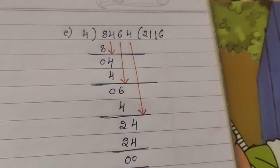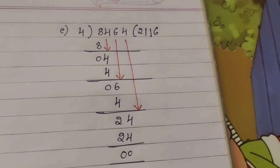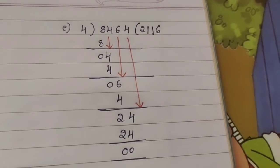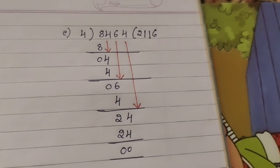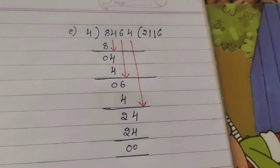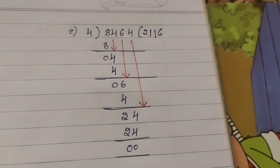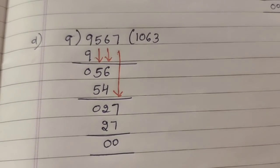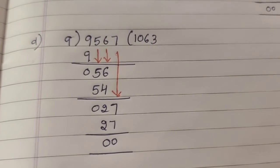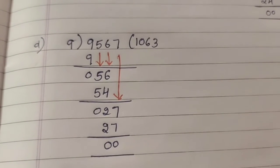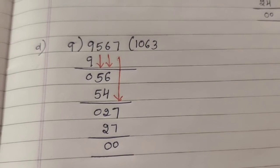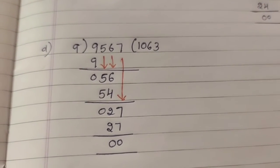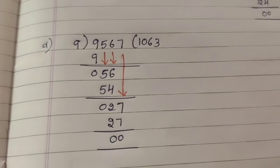Next: 8,464 divided by 4. 4 twos are 8; 8 minus 8 is 0. Bring down 4. 4 ones are 4; 4 minus 4 is 0. Bring down 6. 4 ones are 4; 6 minus 4 is 2. Bring down 4, making 24. 4 sixes are 24; 24 minus 24 is 0. Next: 9,567 divided by 9. 9 ones are 9; 9 minus 9 is 0. Bring down 5. 9 threes are 27; 27 minus 27 is 0.